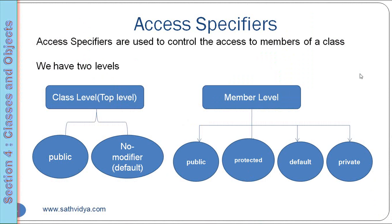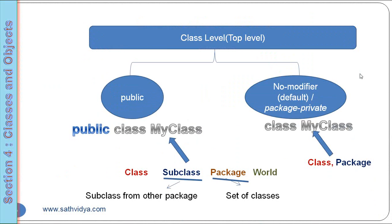At class level we have public as well as no modifier, and at member level we have public, protected, default and private. Coming to class level, public works for class, subclasses, packages and for all. We already saw examples in section 4 with the class and the subclasses. In this lesson we are going to see how these access modifiers work with packages.